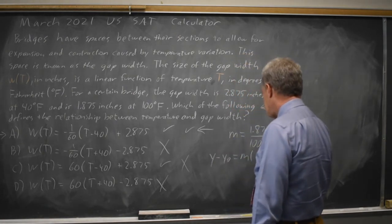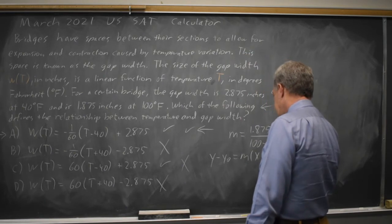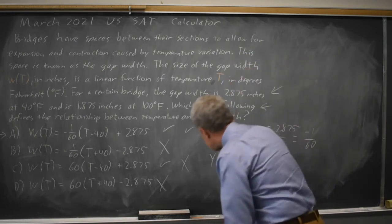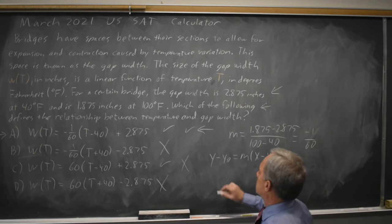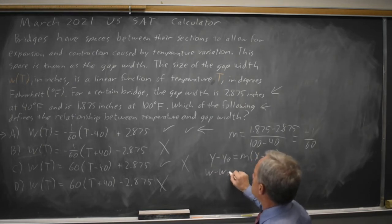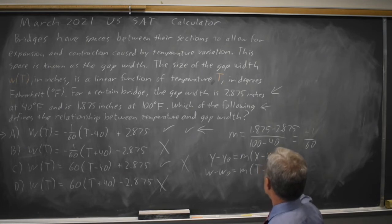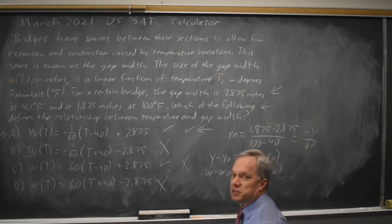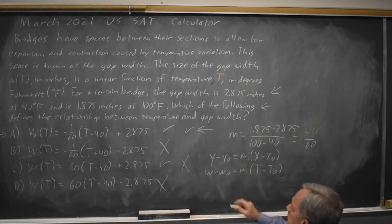where here y really means w, so w minus w0 equals my slope times t minus t0, where w0 and t0 are the width and temperature for a particular point.